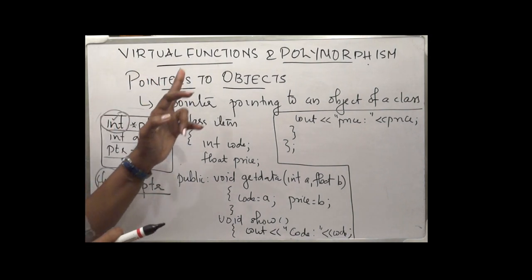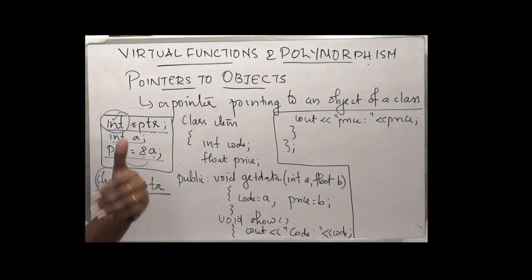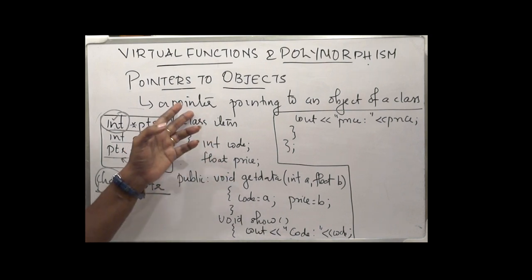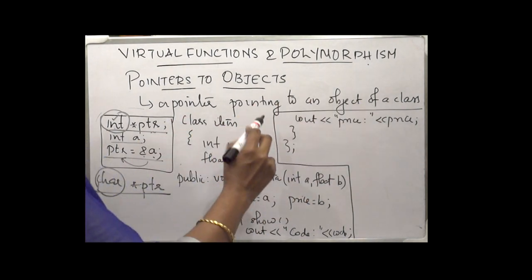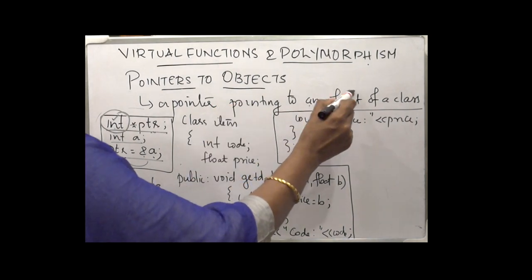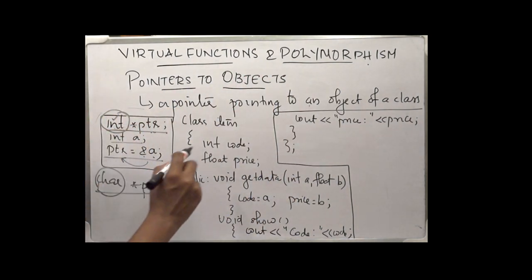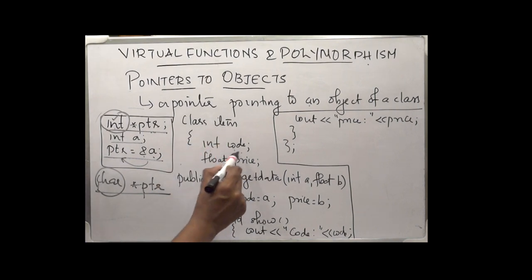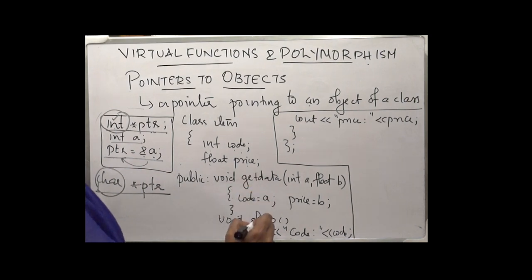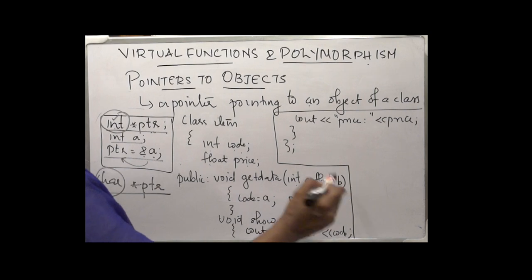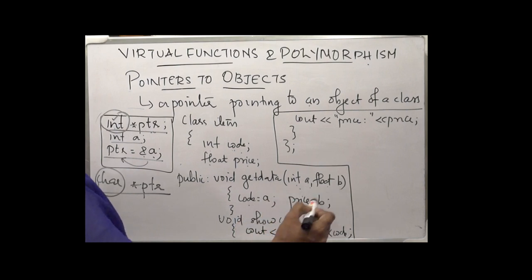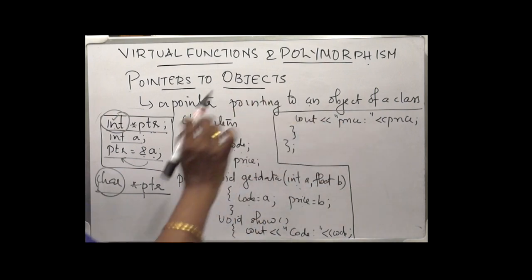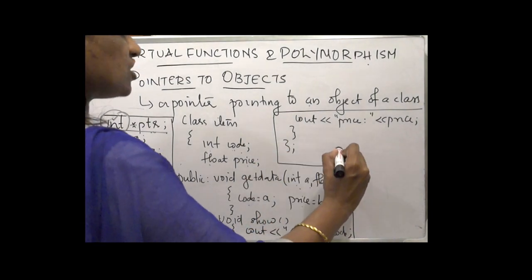Similarly, we can have pointers to objects of a class. A pointer pointing to an object of a class means it can contain the address of an object of that class. Consider this example: class item with data members int code and float price, and two member functions — void getData(int a, float b) to assign values to code and price, and show() to display code and price. We can declare a pointer: item *x.